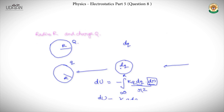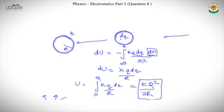This is a hollow sphere of radius R having a charge Q. We need to find the self-potential energy. The approach is to assume that a small charge dq is being added to the sphere one at a time, bringing small charge dq from infinity to the surface one by one.